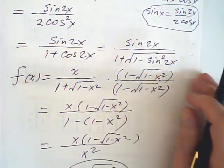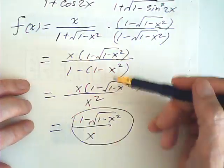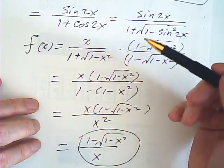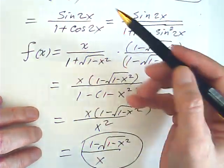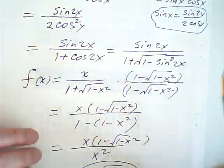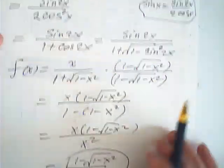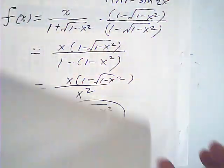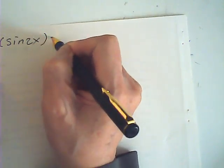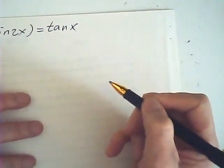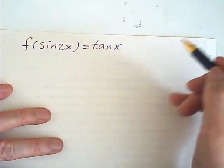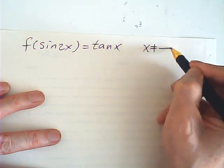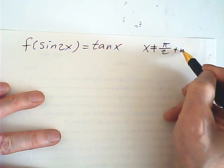Overall, this is not a difficult question. You must be clear about what you want — the idea from the beginning. This is method one. Now method two. f of sine 2x is tangent x, with the same added condition: x is not equal to π/2 plus nπ.